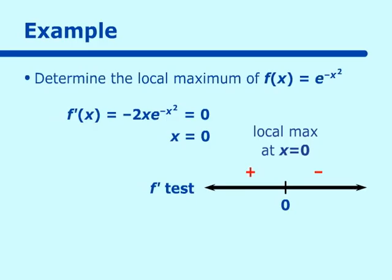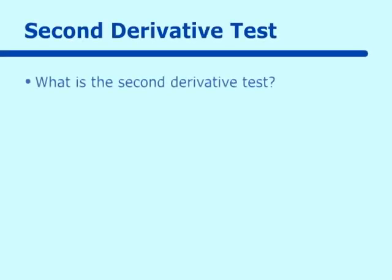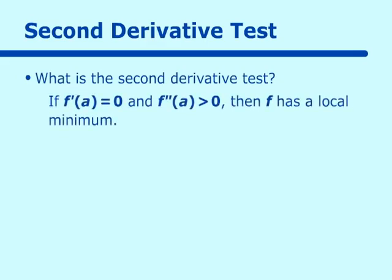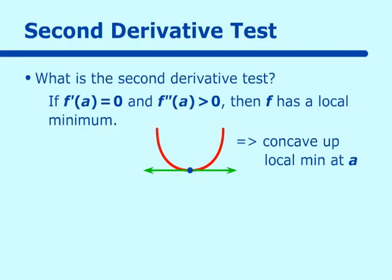In this example we employed the critical point and then showed how the f prime test is used. Now let's go to another definition: the second derivative test. If f prime equals zero and f double prime is greater than zero, then f has a local minimum at a. That means the function is concave up with a horizontal tangent line, giving us a local minimum.